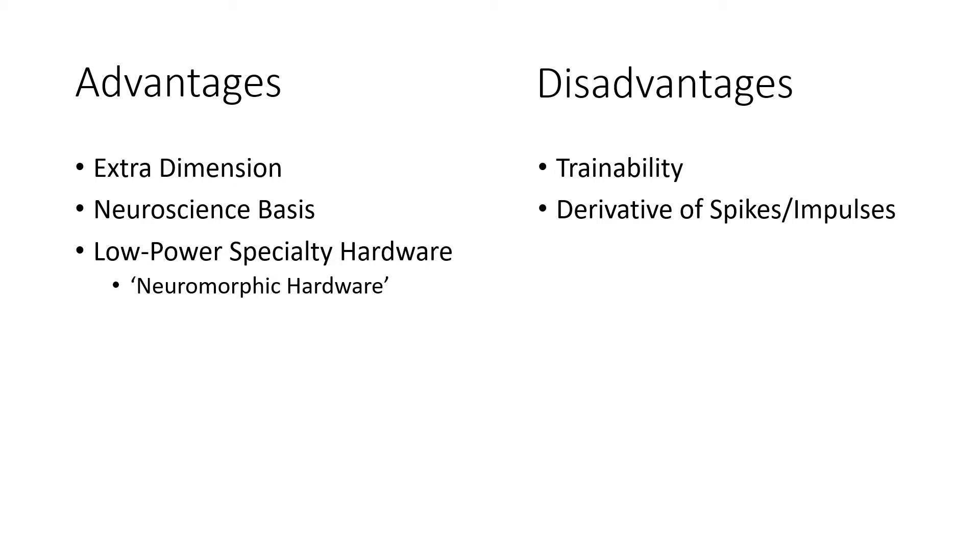Disadvantages are trainability. It's really hard to train spiking neural nets because they're so complex and new and different and we don't set them up in quite the same way that we've set up analog neural nets, which is how we want to train things.